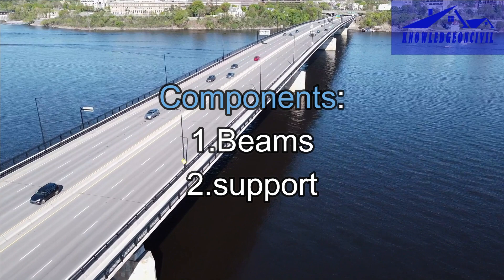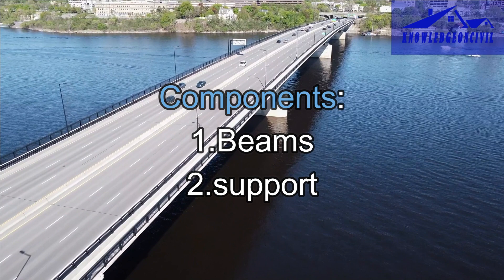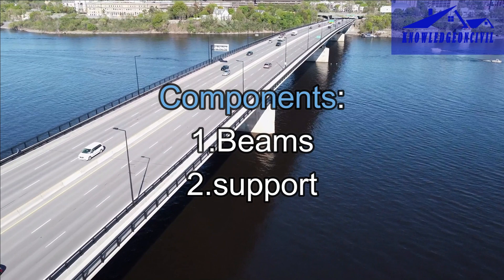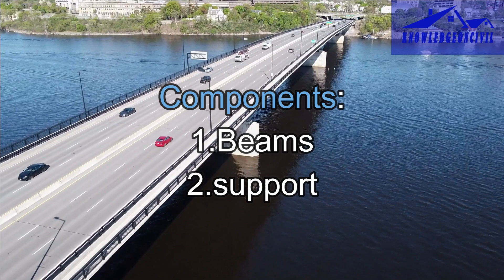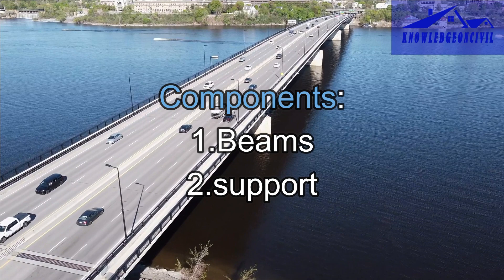The primary load-bearing elements of a beam bridge are the horizontal beams themselves. These beams can be made of various materials including steel, concrete, wood, or a combination, depending on the specific design requirements. Beam bridges have supports at each end in the form of piers or abutments — piers are vertical supports in the water or on the ground, while abutments are horizontal supports at the ends that rest on solid ground.